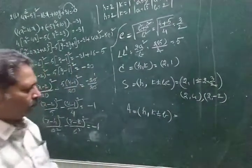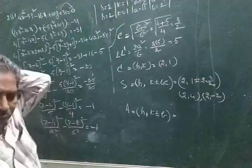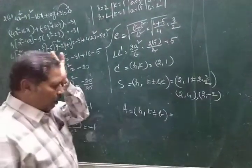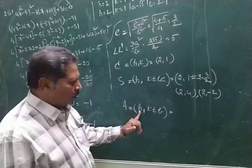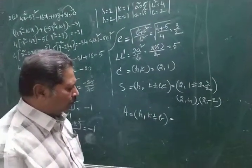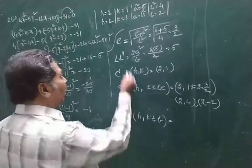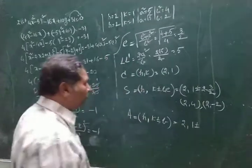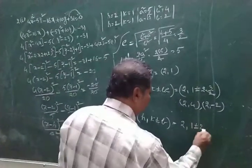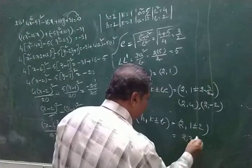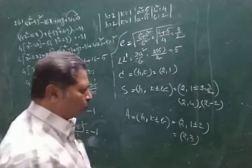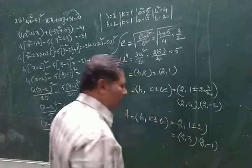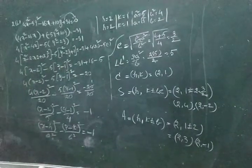Vertices: capital A equals h comma k plus or minus b. With h equals 2, k equals 1, and b equals 2: k plus b gives 1 plus 2 equals 3, so vertex is 2 comma 3. And k minus b gives 1 minus 2 equals minus 1, so the other vertex is 2 comma minus 1.